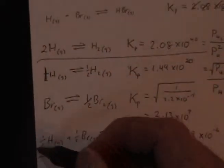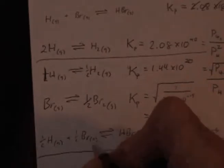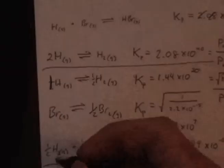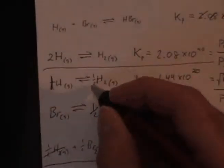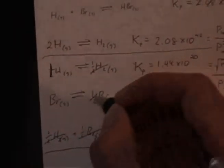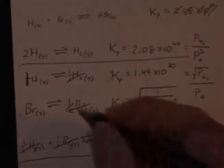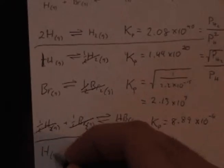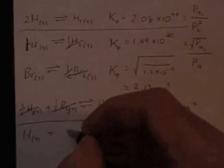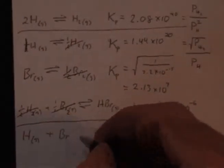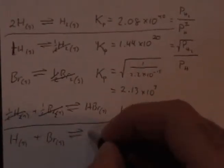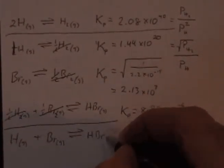And then here my 1 half, sorry, this should have had a 2 there for each of those, because that's what I started with up there. Those will cancel here in the half Br2. And so my net equation is what I want, that gaseous hydrogen atoms react with gaseous bromine atoms, and they form HBr.